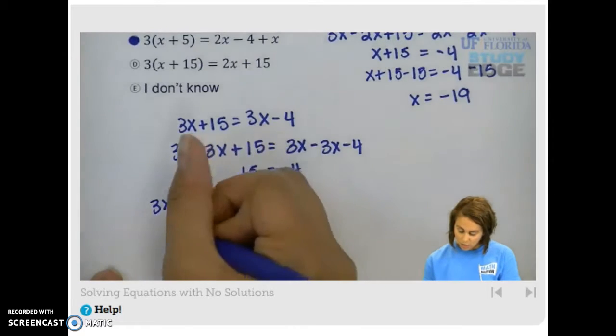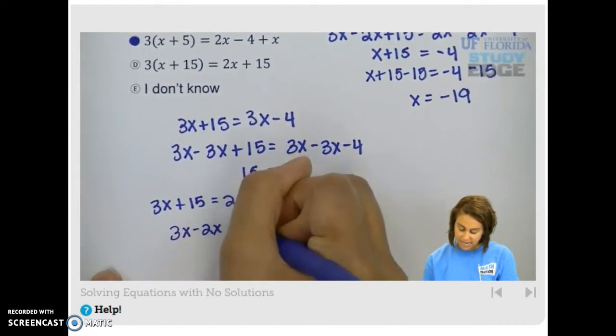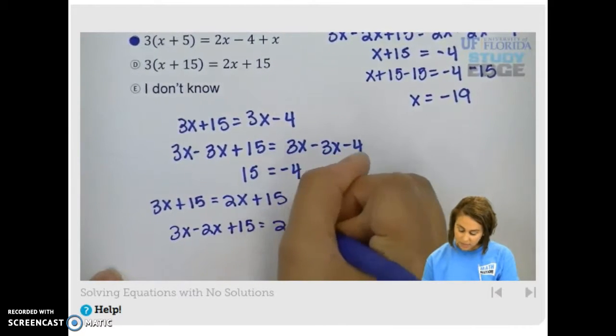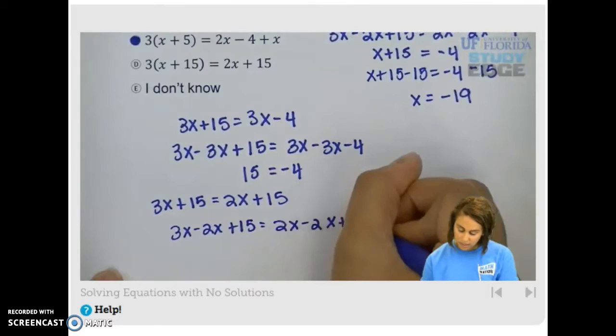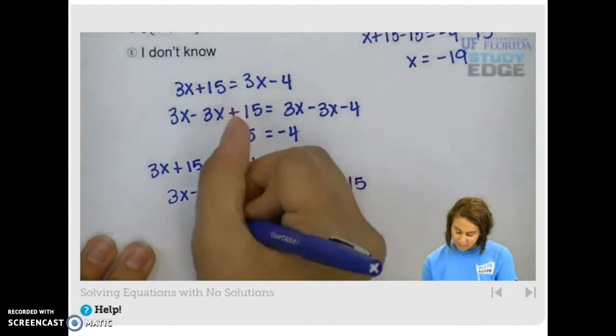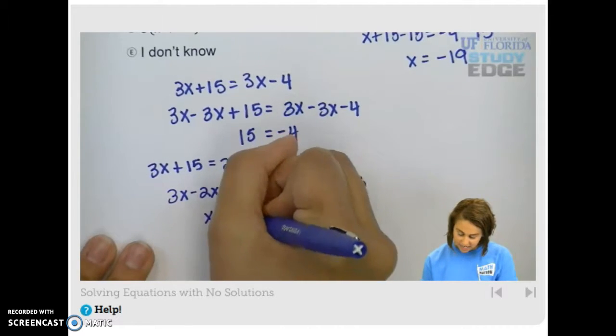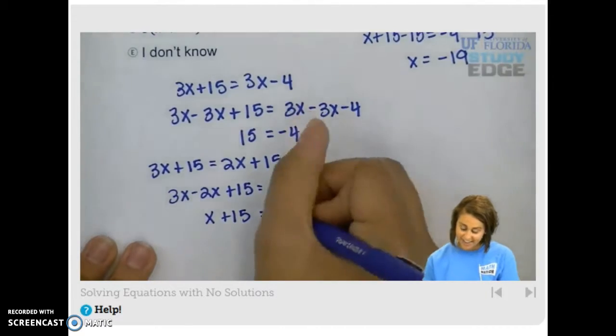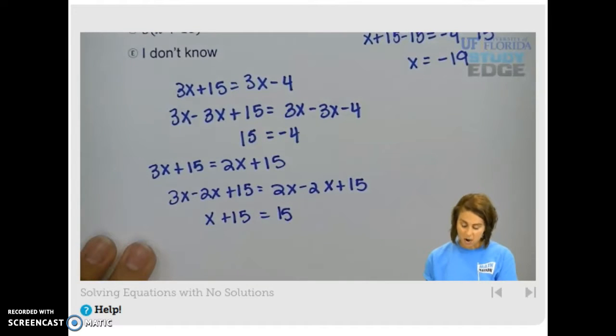So when we subtract, we've got 3x minus 2x plus 15 equals 2x minus 2x plus 15. Do you agree? Good. So we have x plus 15 equals what? 15. Good. And now what?